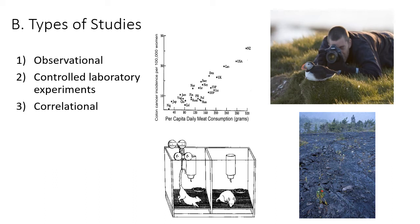We can have correlational studies where we don't necessarily have a cause and effect, but we look at how two variables are connected. For example, this figure shows colon cancer incidence in women and per capita daily meat consumption — we notice these two variables are connected. It doesn't necessarily mean one causes the other, but it appears that the more meat an individual or country collectively eats, the higher the incidence of colon cancer. That is a correlation.